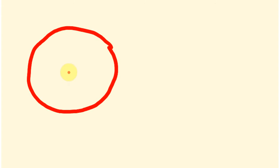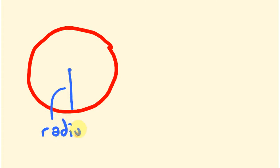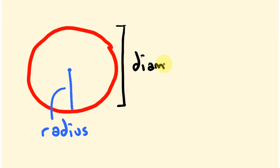First off we're going to be looking at this thing called the radius. The radius is the distance from the middle to the edge, which is the same no matter where you are. The other way we might measure a circle is in terms of this entire distance across, which is called the diameter. The diameter is twice that of the radius.